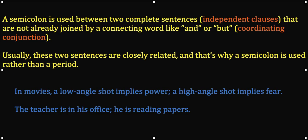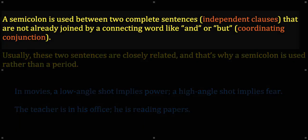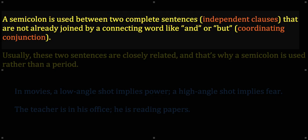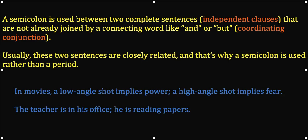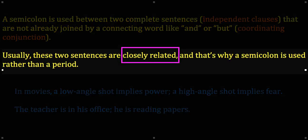Hopefully you've observed these things in those examples. A semicolon is used between two complete sentences — the big word for that is independent clauses, so there are two sentences that can stand on their own. And these are sentences that are not already joined by a word like and, or, but, or nor — those are called coordinating conjunctions. Two complete sentences. But the next part is important: these two sentences are closely related. That's why a semicolon is used rather than a period.